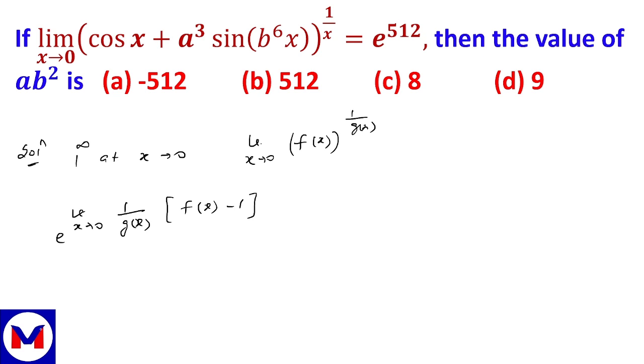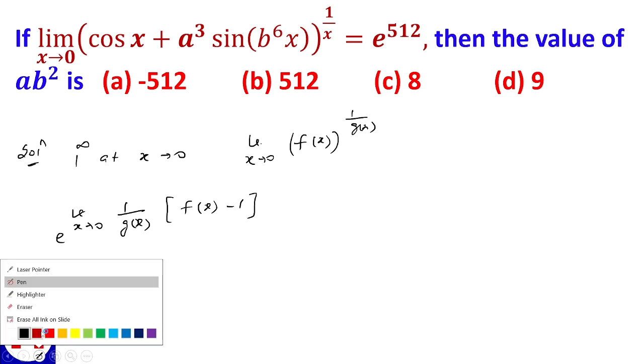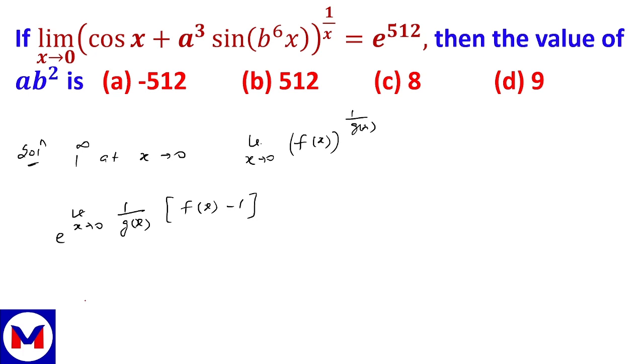This is our problem. We have limit x tend to 0, cos x plus a cube sine b to the power 6x, whole to the power 1 by x equal e to the power 512, which is in the form of 1 to the power infinity.